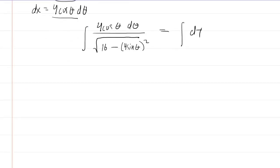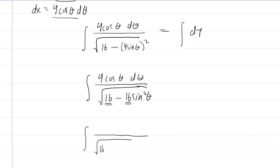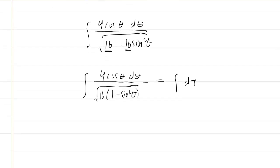We will simplify the denominator. We'll square the 4 sine of theta. So now we have 4 cos theta d theta over the square root of 16 minus 16 sine squared of theta. We can actually factor out a 16 underneath the square root. So you're going to be left with 16 times 1 minus sine squared of theta underneath that square root.